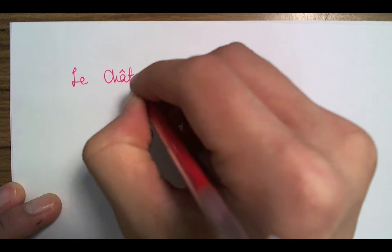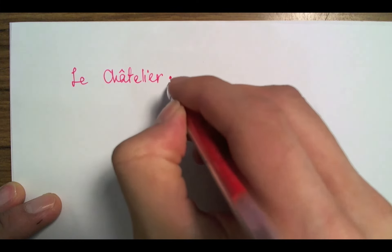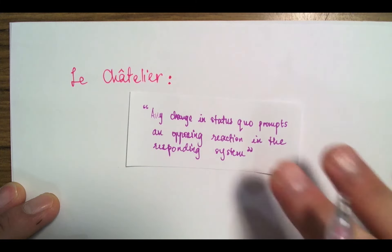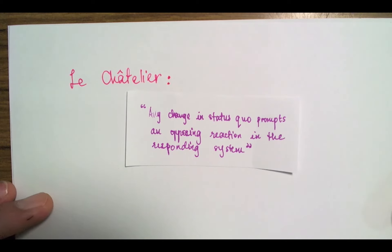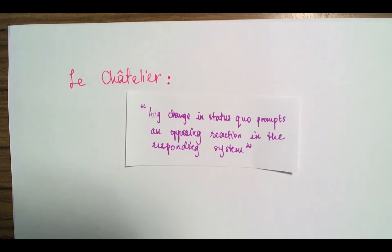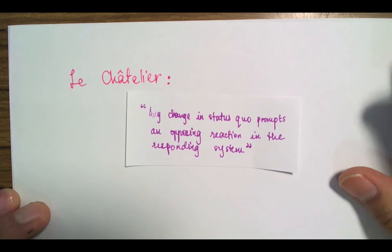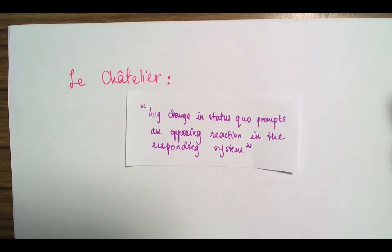Before we get to investigating how external conditions can affect the equilibrium of the system, I need to introduce to you something called Le Chatelier's principle. This was discovered by a Frenchman in the 19th century — his name was Le Chatelier. The Wikipedia definition states: any change in status quo prompts an opposing reaction in the responding system. You can do this as experiments in the lab and you'll see that this is indeed true. In fact, it has a larger implication than just chemistry — it has implications in sociology and economics, where this notion of negative feedback means that if you try to stress the system in one direction, it tries to somehow relieve that stress.